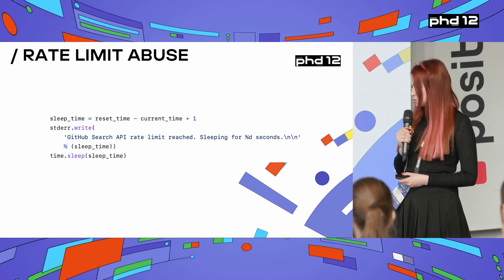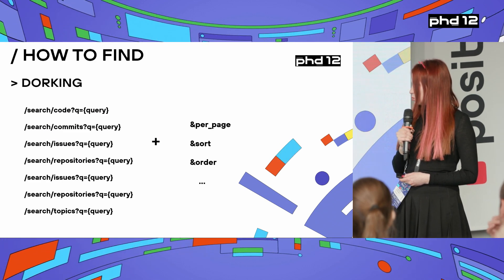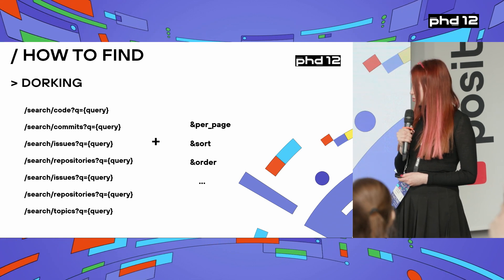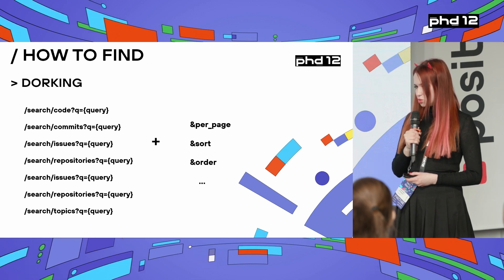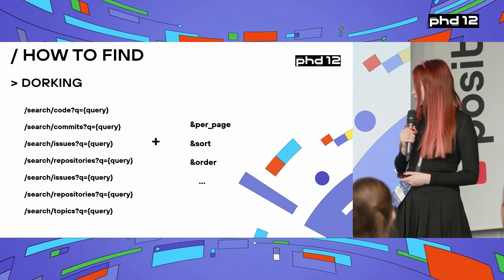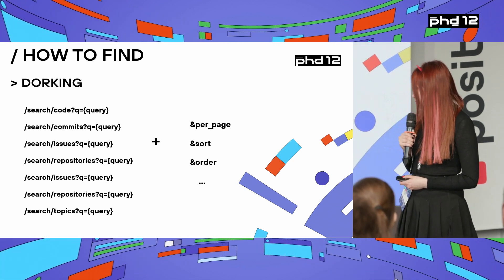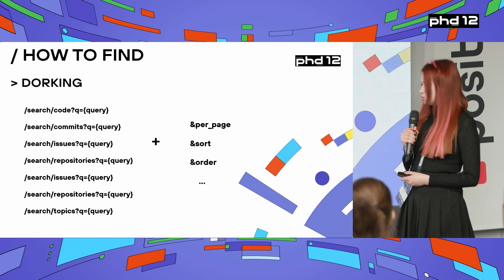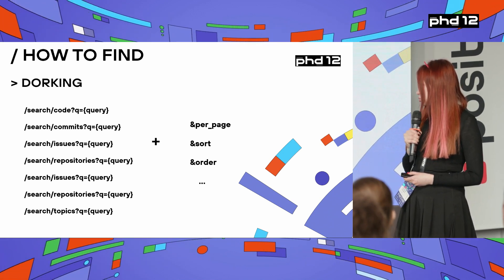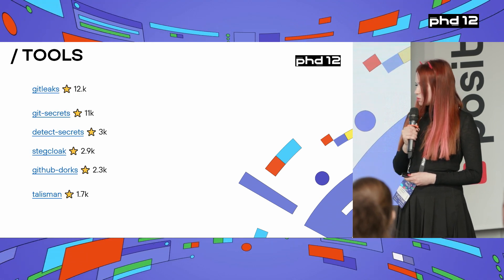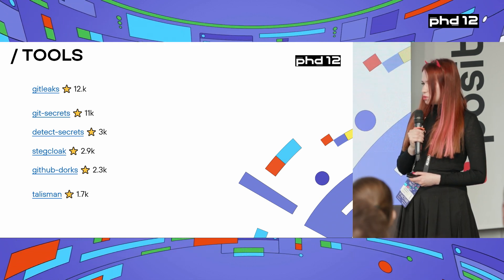To bypass the rate limit, you can use sleep time between requests and also rotate tokens. It's pretty easy to write code for it. To find secrets, I've been using dorking — everybody knows about it, it works pretty well and has good documentation. You write a query after a question mark and can add parameters for sorting, select a page, and so on. You don't have to create custom scripts since everything is pre-made.